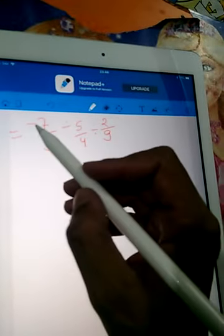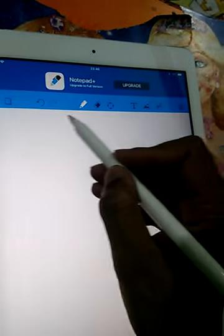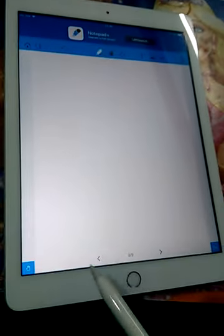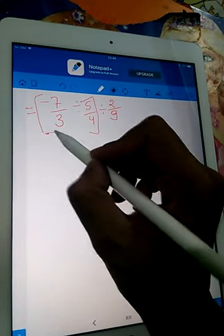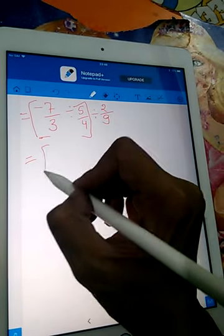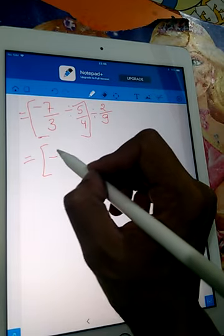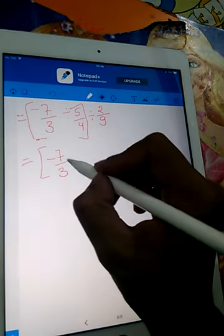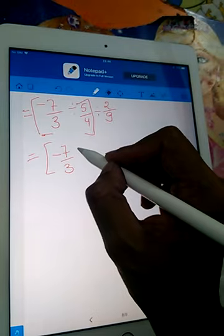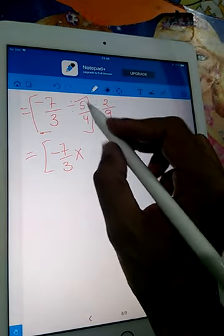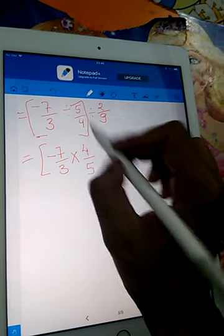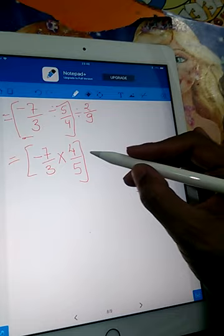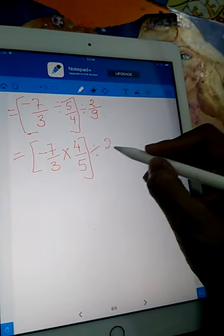Now we will regroup A and B. So minus 7 upon 3. Division becomes multiplication and we write the reciprocal of 5 by 4, that is 4 by 5, that is we make the rational number ulta. So minus 7 divided by 4 divided by 2 by 9.